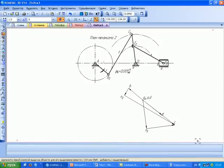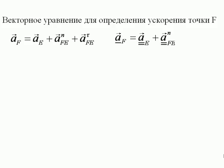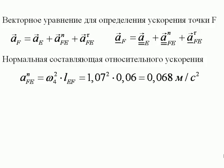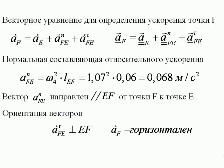Переходим к определению ускорения точки F. Для этого понадобится одно векторное уравнение, поскольку линия действия вектора AF известна, и в этом уравнении неизвестных две. Модуль нормальной составляющей относительного ускорения равен 0,68 м/с². Вектор a_FE^n направлен параллельно EF от точки F к точке E. Вектор a_tau_FE перпендикулярен шатуну EF, а вектор ускорения ползуна горизонтален.